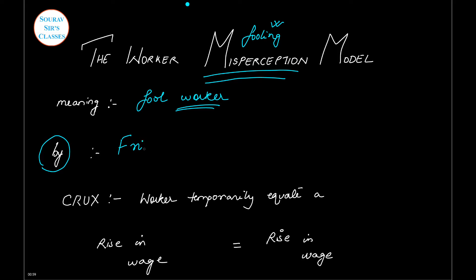This model has been presented by Friedman. Now what is the crux or essence of this model? The essence is that the worker will temporarily—that means once he realizes he is making the mistake he will not continue it—but for a short time span, he will equate a rise in nominal wage with a rise in real wage.